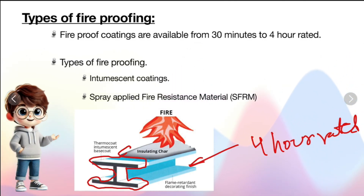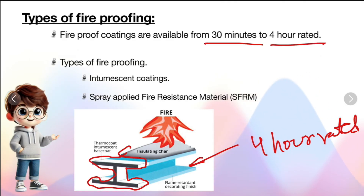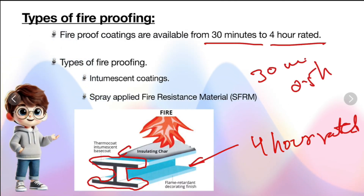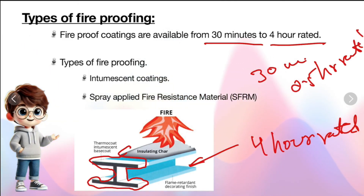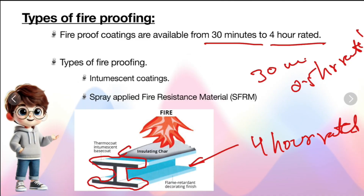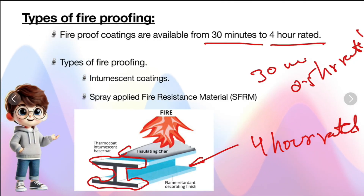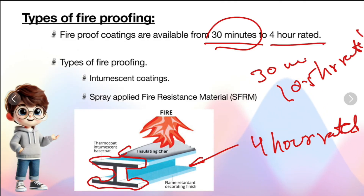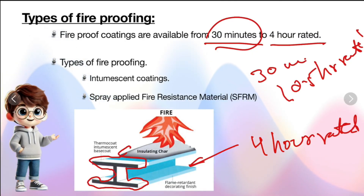Let's see what 30 minutes and 4-hour rated means. For example, if it indicates 30 minutes or 0.5-hour rated, it means that when this 0.5-hour rated coating is applied on the steel and that steel is subjected to fire attack, up to half an hour that steel will not lose its strength properties. That is the meaning of 30-minute rated or 0.5-hour rated. In the same way, 1-hour, 2-hour, 3-hour, and 4-hour rated coatings also exist — intumescent coating will be up to 4-hour rated, but it is a costly process.